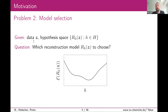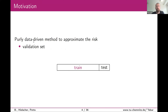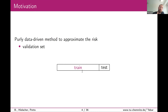One method is to use a validation set: split your data, using say 90% for training the model and the remaining 10% to approximate the L2 error. The drawback is that you don't use all your data for training — some data is essentially reserved for approximating the L2 error. You also have to make this test set sufficiently large so that the approximation is sufficiently accurate.